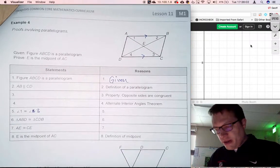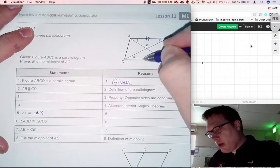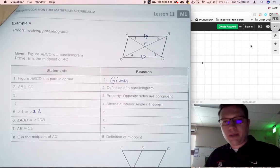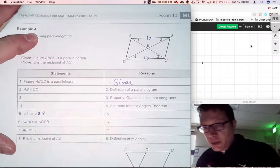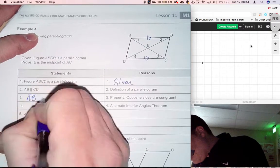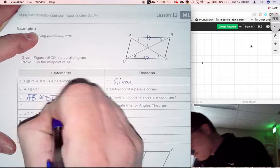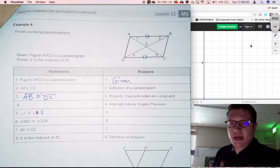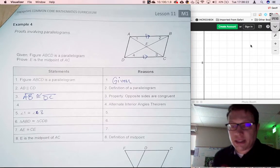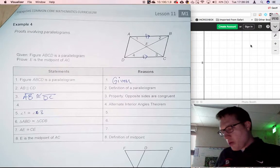Also, because it's a parallelogram, opposite sides are equal. So we get a tick mark on AB and a tick mark on DC, which means we're going to write in line three: AB is congruent to DC. That gives us opposite sides that are parallel, opposite sides that are equal, and then we're going to start working with the angles.